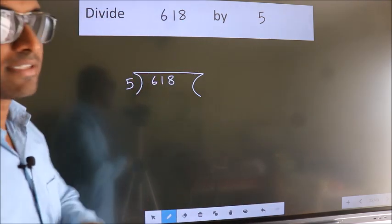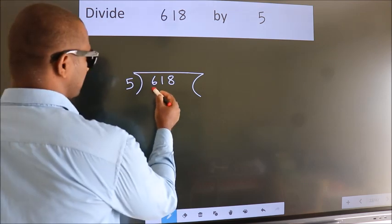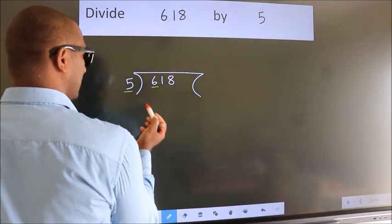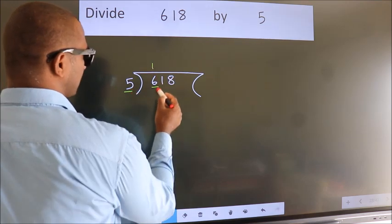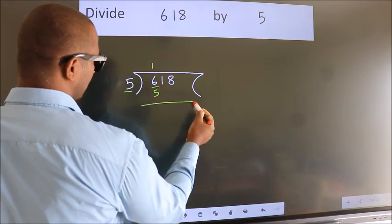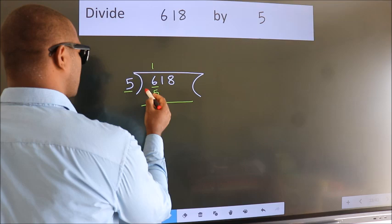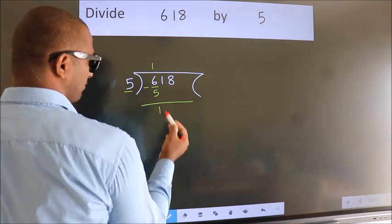Next. Here we have 6, here 5. A number close to 6 in the 5 times table is 5 - once 5. Now we should subtract. We get 1.